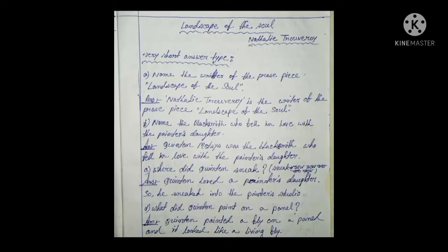Name the blacksmith who fell in love with the painter's daughter. Quentin Metzies was the blacksmith who fell in love with the painter's daughter. Quentin loved the painter's daughter, so he sneaked into the painter's studio. Quentin painted a fly on a panel and it looked like a living fly.